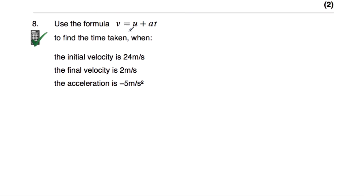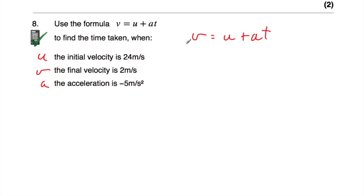Question number 8: use v equals u plus at to find the time taken, when the initial velocity is 24 metres per second, the final velocity is 2 metres per second, and the acceleration is negative 5 metres per second squared — so it's decelerating. So v equals u plus at: 2 is equal to 24, plus negative 5 times t, which gives us 2 equals 24 minus 5t.